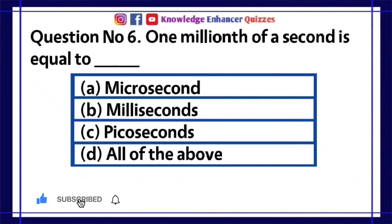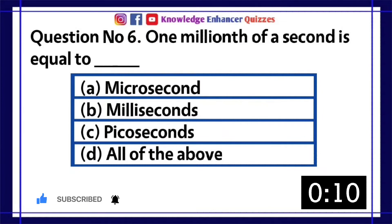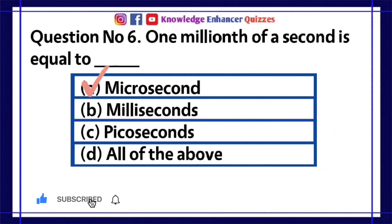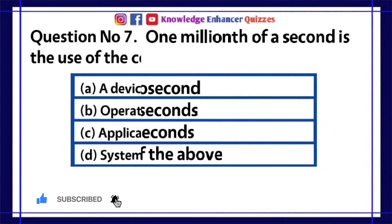Question number 6. One millionth of a second is equal to dash. A. Microsecond. B. Milliseconds. C. Picoseconds. D. All of the above. Option A is the right answer.